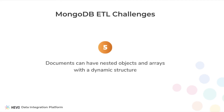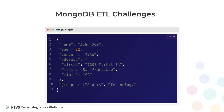The most complex of MongoDB ETL problems is handling nested objects and arrays. MongoDB allows nesting objects and arrays at any depth. A complex real-life scenario may become a nightmare trying to flatten such documents into rows and columns for a Redshift table.